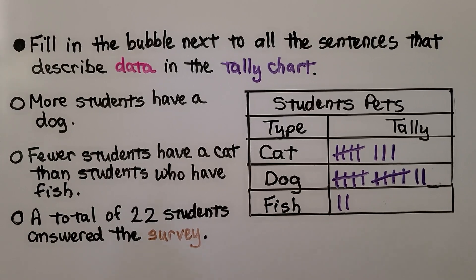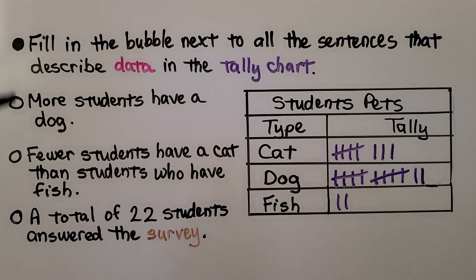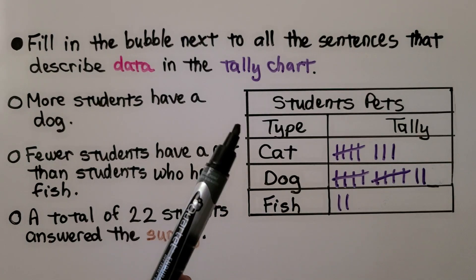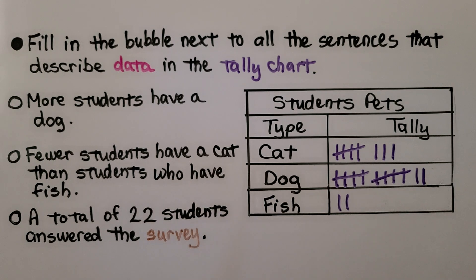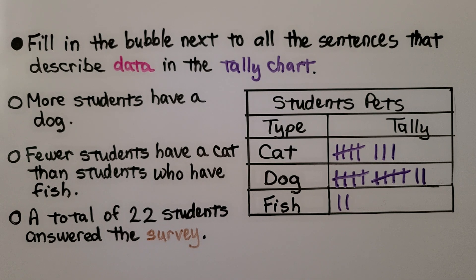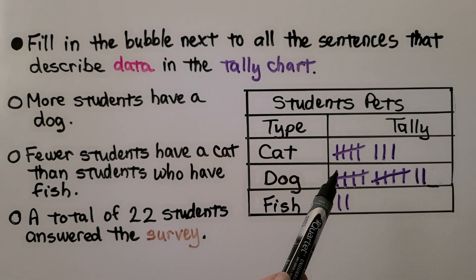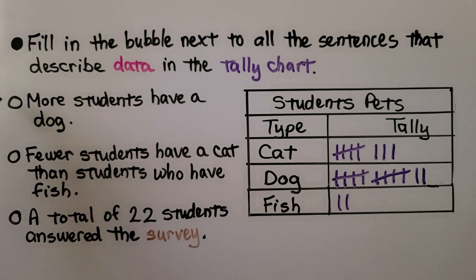This problem says to fill in the bubble next to sentences that describe the data in the tally chart. The tally chart shows students' pets — cat, dog, and fish — with tally marks. The first option says 'more students have a dog.' Do more students have a dog? Yes! We can see there are more tally marks for dog than for cat or fish, so we can fill this in.